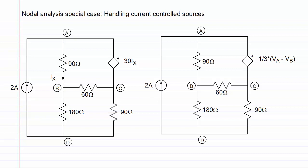In this video, we will give the last special case for nodal analysis, which is how to handle current controlled sources in this method. The circuit on the left shows a current controlled voltage source, or a CCVS. It is controlled by the current IX.